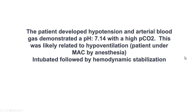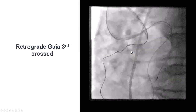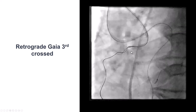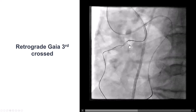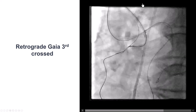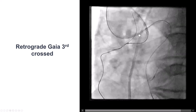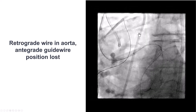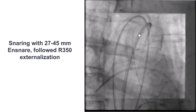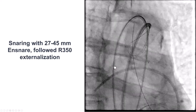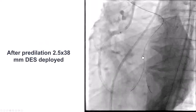The patient was receiving MAC anesthesia, so the patient was intubated and his hemodynamics stabilized. Shortly afterwards, we were able to advance a retrograde Gaia 3rd that successfully crossed into the ascending aorta. We then snared the retrograde guidewire using a 25 by 45 cm snare and externalized an R350.